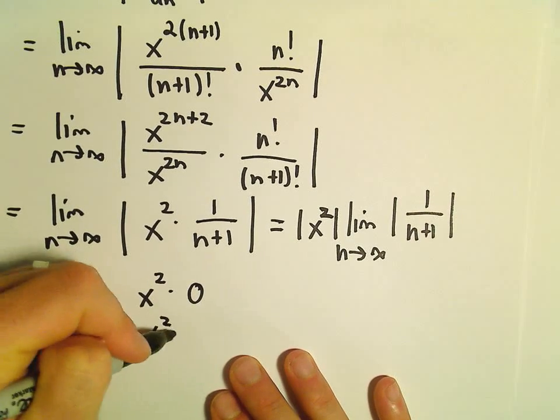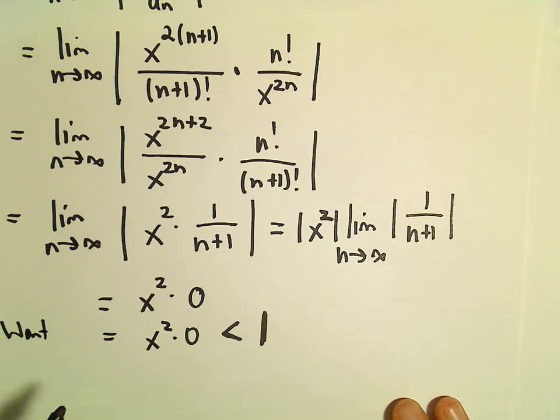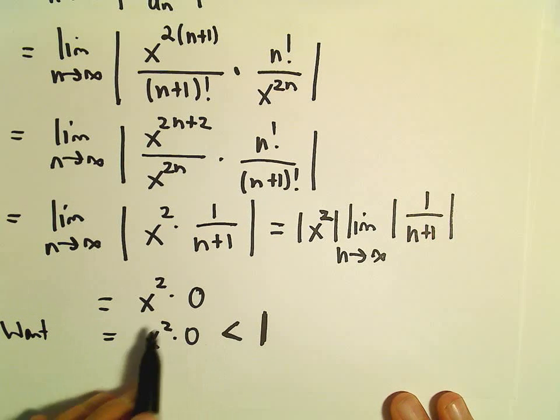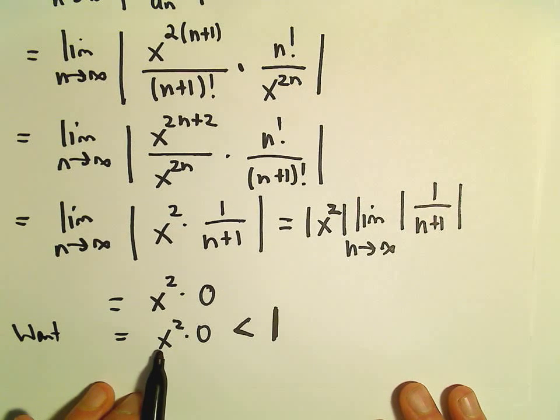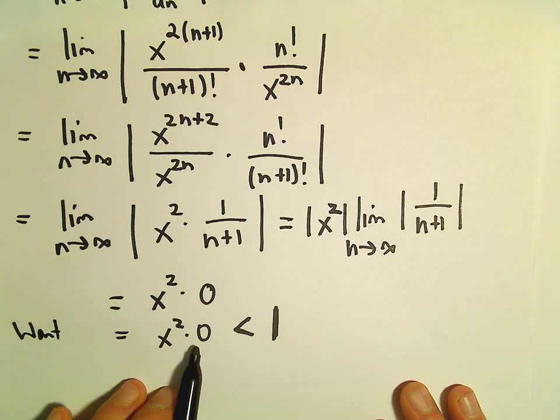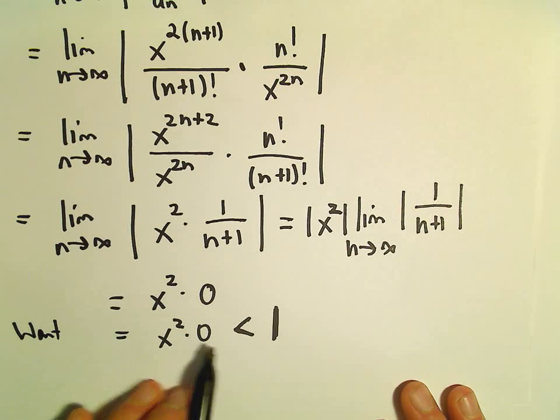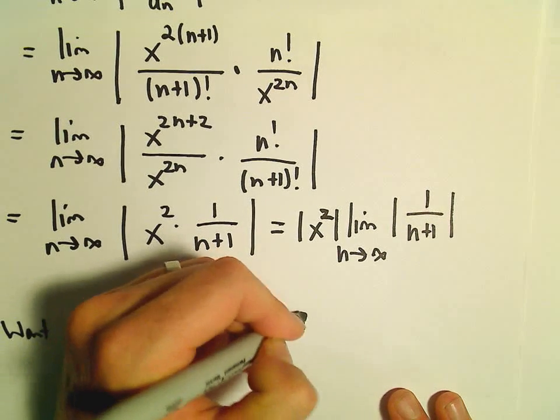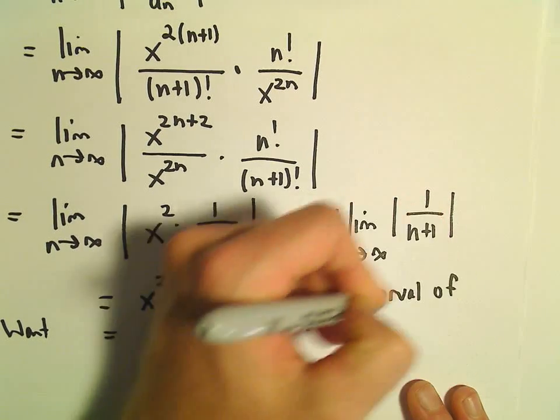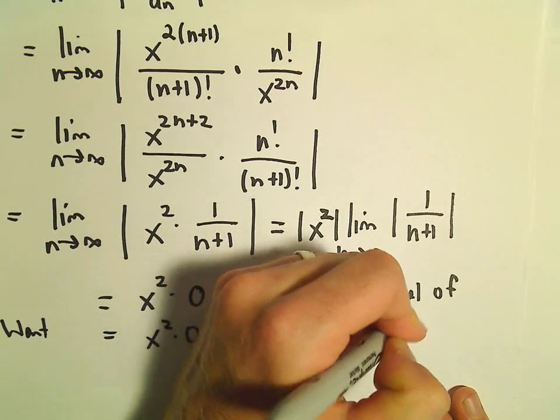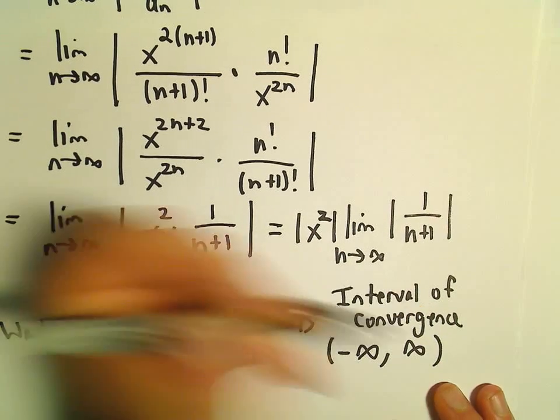So we want our ratio to be less than 1. Remember for the ratio test for the series to converge, the ratio has to be less than 1. So I'm kind of thinking, what values can we plug in for x and multiply it by 0 and get something less than 1? Well, any number that you plug in and multiply it by 0, you'll get something less than 1. So what that tells us is, the interval of convergence is just going to be all real numbers. So everything from negative infinity up to positive infinity.